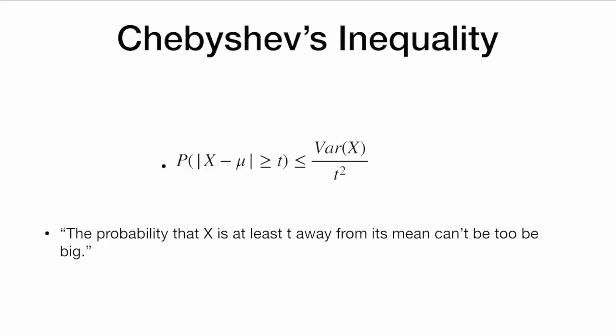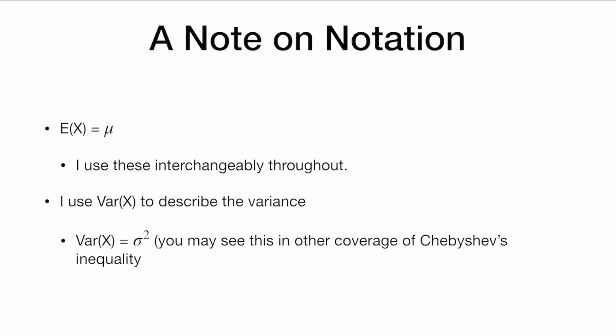Chebyshev's inequality tells us that the probability that the absolute value of x minus mu being at least t is less than or equal to the variance of x over t squared. What this means is that the probability that x is at least t away from its mean cannot be too big. A note on notation: throughout this presentation I will use E[x] and mu interchangeably — these are the mean or expected value of a random variable — and I will use Var(x) for the variance. We might also see this written as sigma squared; these mean the same thing.